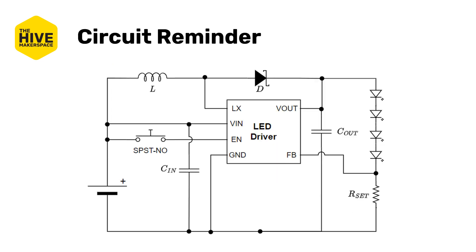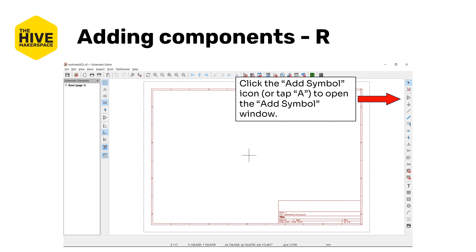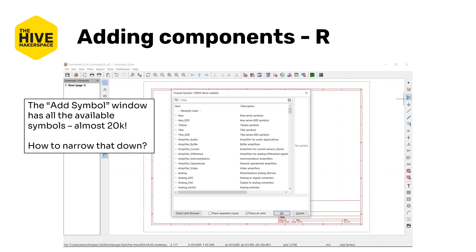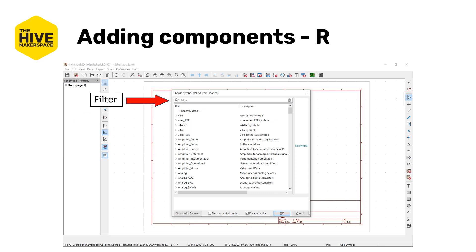One more time with the circuit reminder — we're going to start adding symbols now. We'll start with the generic symbols like the resistor, LED, batteries, and so on, and then we will do the switch. The IC chip in the middle will come last. To add a symbol to the schematic, tap the A key on your keyboard or click the icon in the action toolbar — it's the top one that looks like an operational amplifier. This will open up the add symbols window. There are nearly 20,000 symbols built into KiCAD, so one of the questions is how do we actually narrow that down? One way is to use the filter at the top of the window.